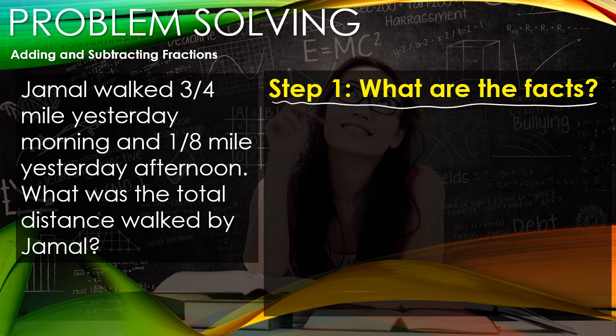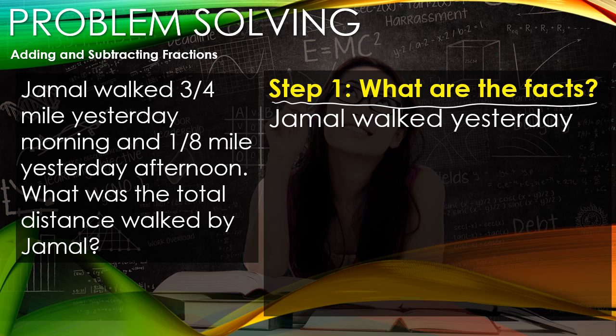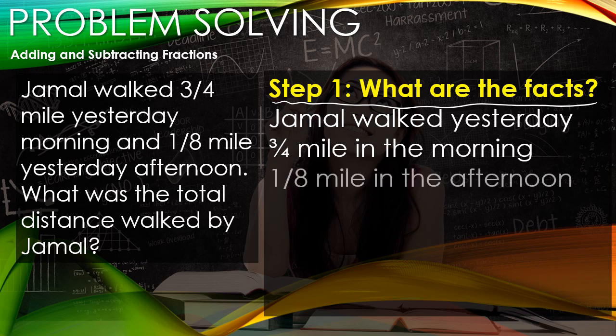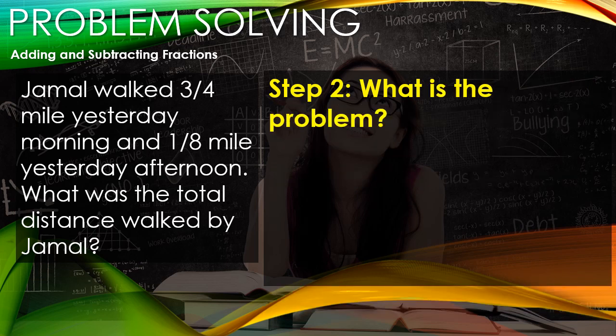Step one: If you can figure out what the facts are, you'll be on the right track. So our first one is that Jamal walked yesterday. You say that's pretty simple, but that's a great starting point. At least now you're trying to picture maybe where he walked - to school, to a friend's house, to the store, you got a Slurpee, whatever. He was walking there. He walked three-quarters of a mile in the morning and an eighth of a mile in the afternoon. So maybe he walked to school in the morning but then walked to a friend's house in the afternoon, a little shorter of a distance.